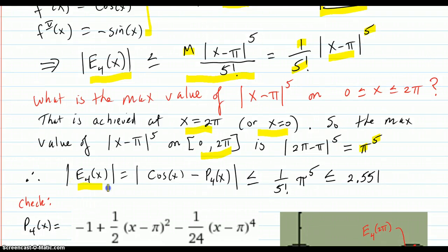So the error between the function and the P4 Taylor polynomial degree four is this number. Because the x minus π to the fifth is bounded by π to the fifth, and the M bound was 1, this comes out to approximately 2.551.